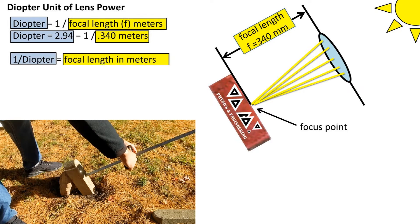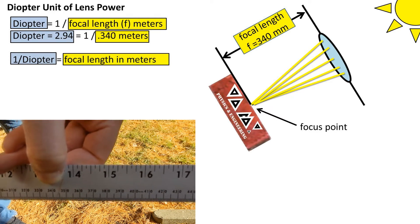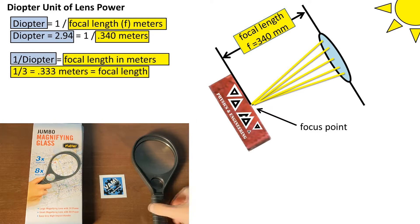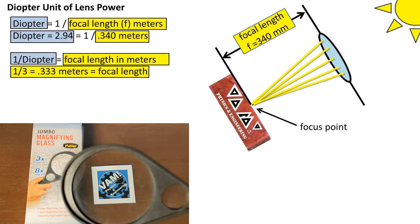So let's see what the focal length in theory should be. We can take one over the diopter on the box and we get a focal length of 0.333 meters. So the experimental value is fairly close.